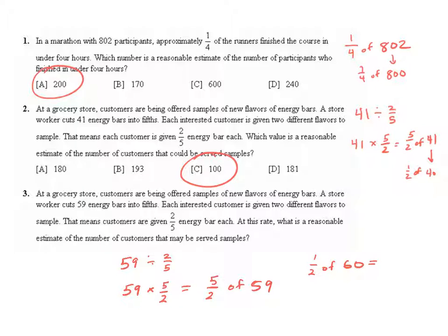One-half of 60 is 30, but I don't want one-half. I want five-halves, so 30 times five gives me 150 different samples that I can create from those energy bars.